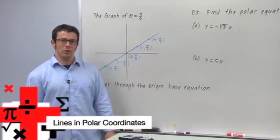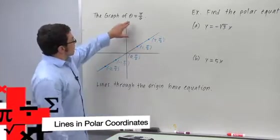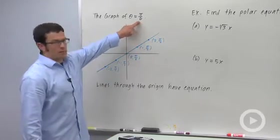I want to talk about lines in polar coordinates. Now let's take a look at the graph of one of them. Theta equals pi over 6.